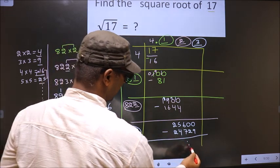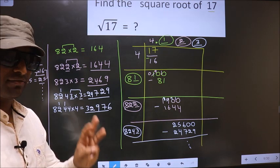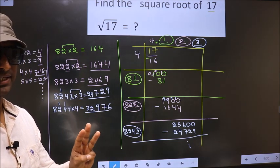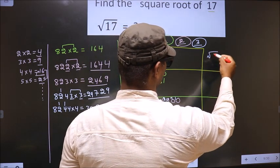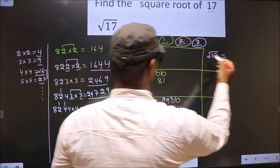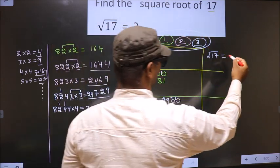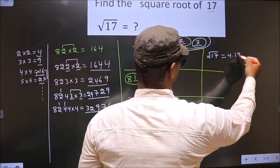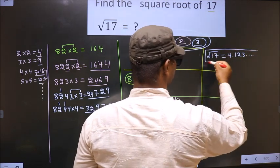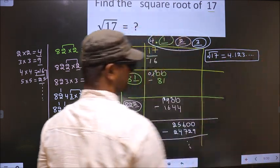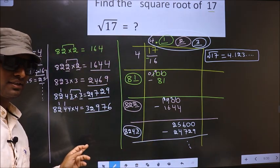Now subtract and it goes on. It is enough if we take up to 3 decimal places. So the square root of 17 is 4.123, and it goes on. This is our answer.